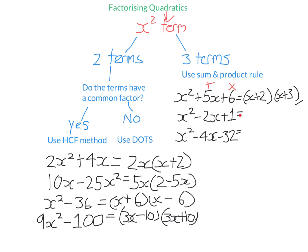Let's look at this next one. We want the same thing — two brackets with X in both. We want two numbers that multiply to 1 and add to negative 2. Both numbers are the same: they're both negative 1. Negative 1 times negative 1 is 1, and negative 1 plus negative 1 is negative 2. So you might see it written as X minus 1 squared rather than X minus 1 times itself. Either way, it doesn't matter.